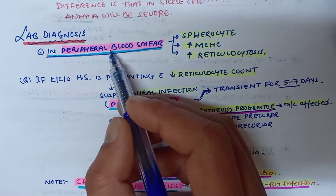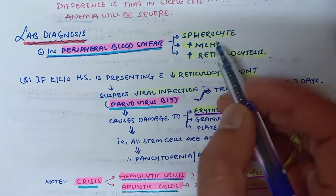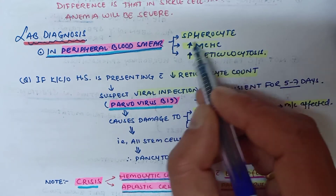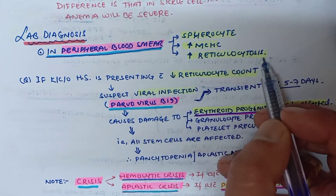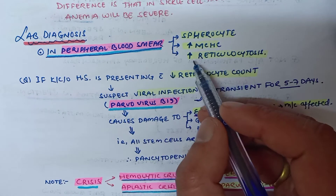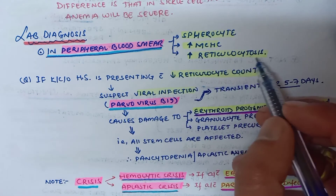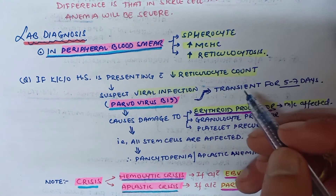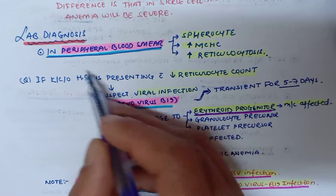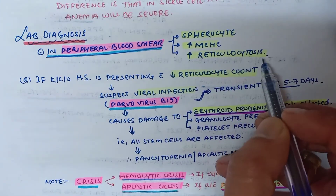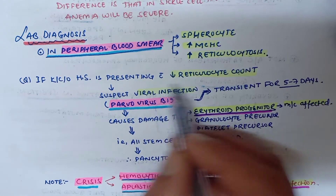In laboratory diagnosis, peripheral blood smear will show spherocytes, increased MCHC count, and increased reticulocytosis. In hereditary spherocytosis, there will be increased reticulocytosis. If a patient with hereditary spherocytosis presents with decreased reticulocytosis, you have to suspect a viral infection.